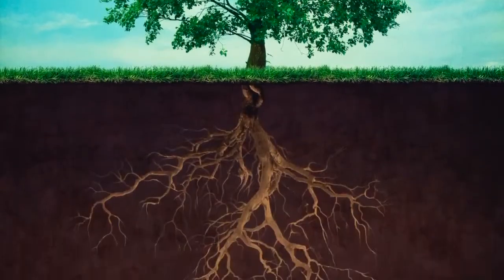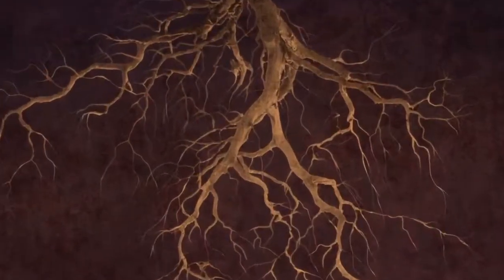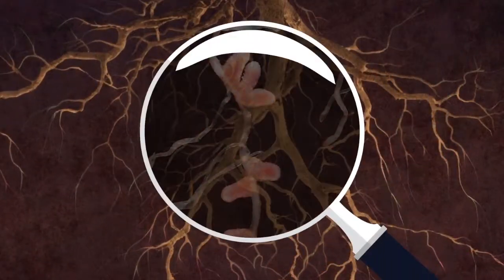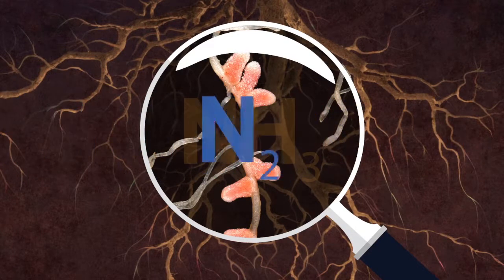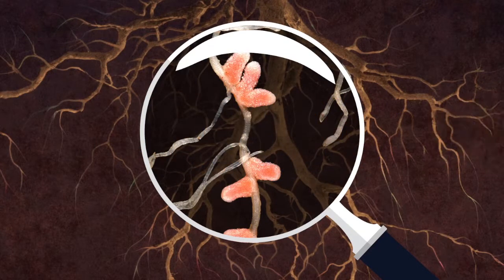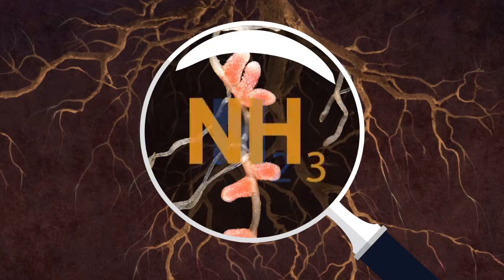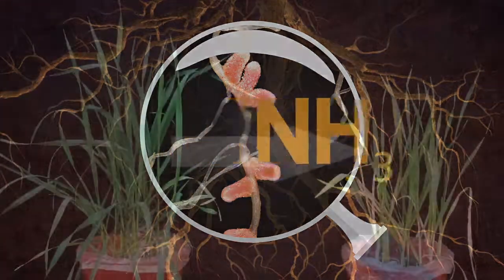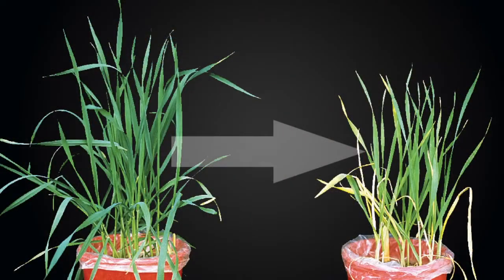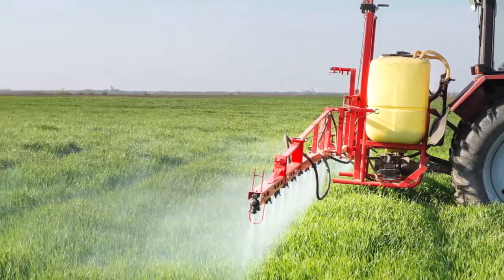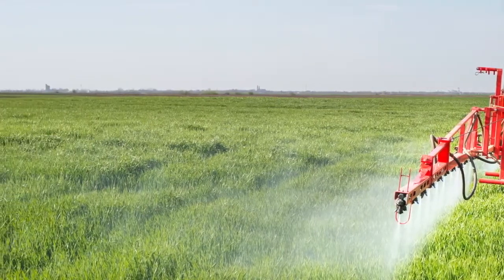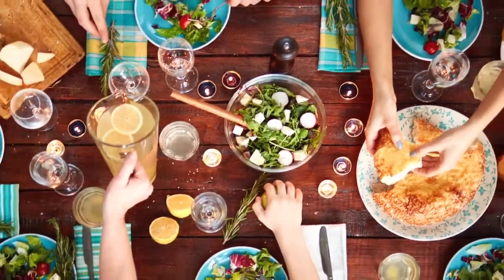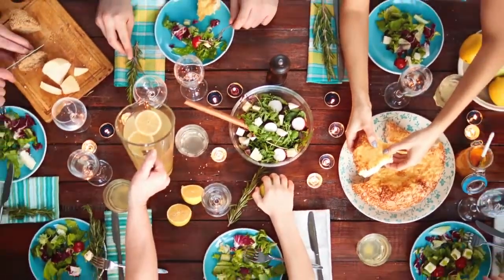Microbes help plants grow in other ways as well. They take a chemical called nitrogen and convert it so that it is in a form that can be used by plants. Without the power of nitrogen fixation, plants would be stunted or wouldn't grow at all. If we didn't have microbes, farmers would have to put a lot more fertilizer on their fields in order to make enough food to feed everyone.